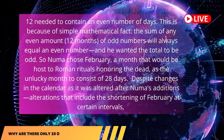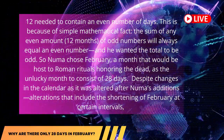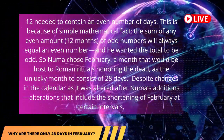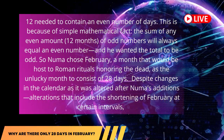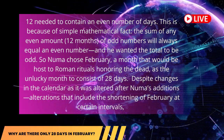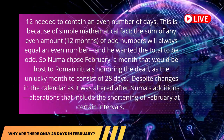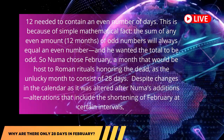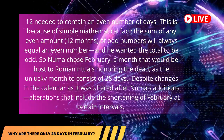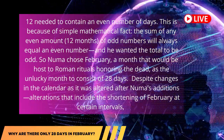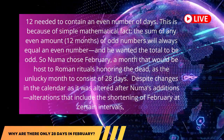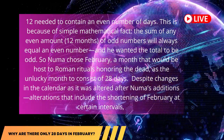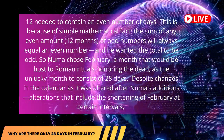This is because of a simple mathematical fact: the sum of any even amount — 12 months — of odd numbers will always equal an even number, and he wanted the total to be odd. So Numa chose February, a month that would be host to Roman rituals honoring the dead, as the unlucky month to consist of 28 days.